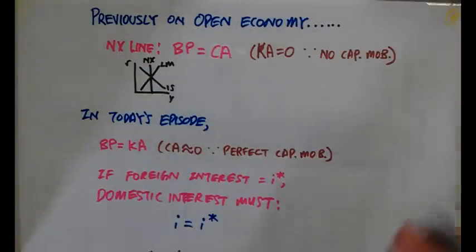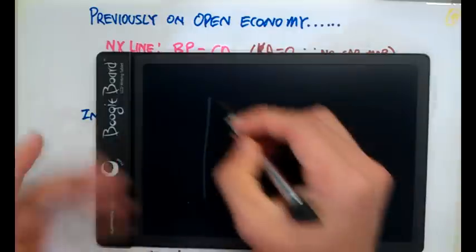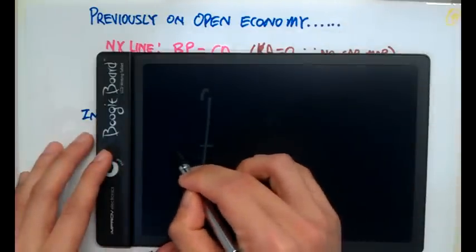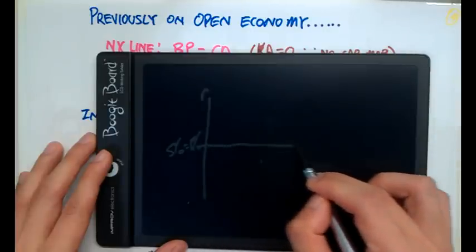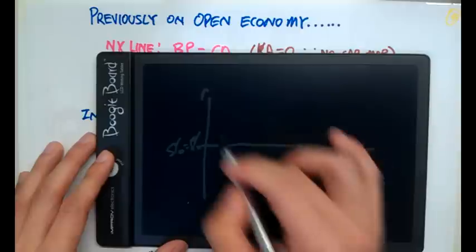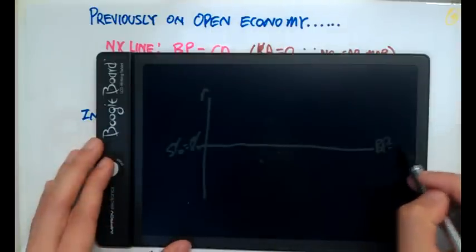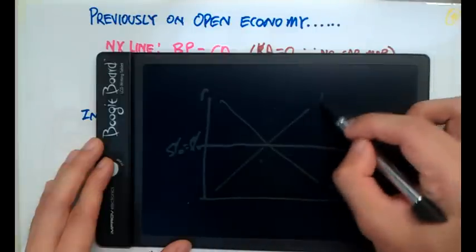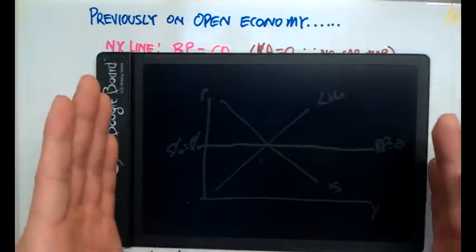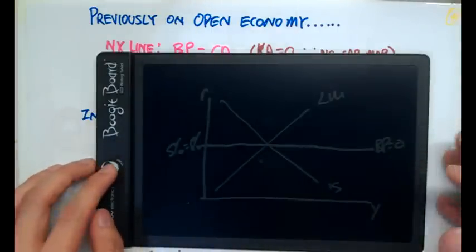Only if interest rates are equal will the balance of payment be zero, because investors will be indifferent between the two economies. On a graph with interest rates on the Y-axis, if both countries are at 5%, the BP equals zero line is a horizontal line at that interest rate level. Adding the X-axis for output, along with the IS and LM curves, gives the IS-LM-BP model for analyzing perfect capital mobility.